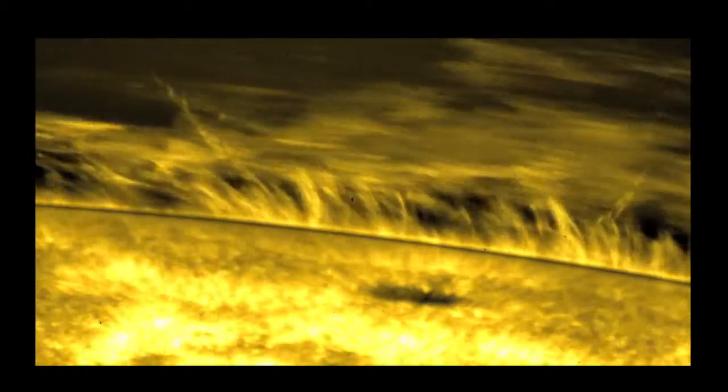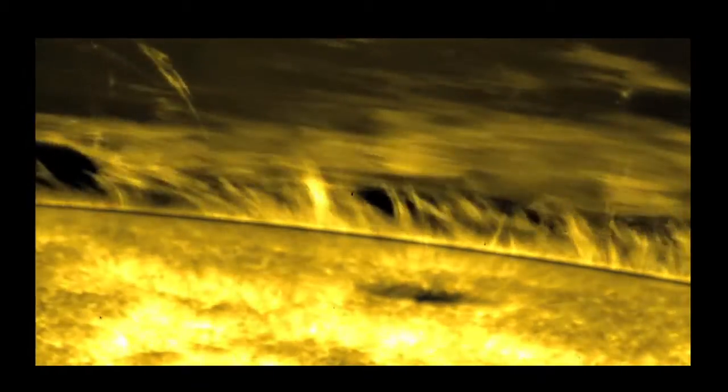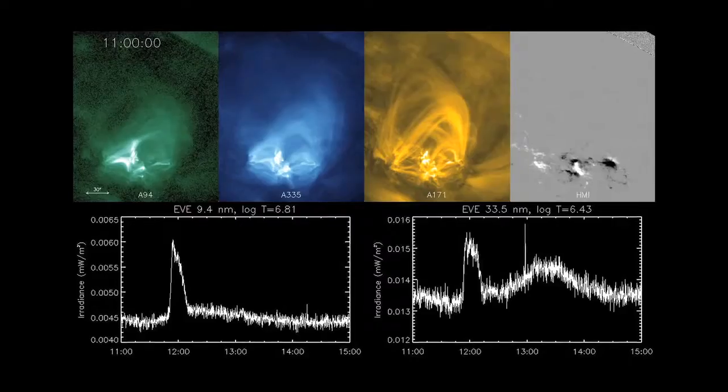It must be known that the interior rotation of the Sun is a fundamental element. That is what generates the magnetic field that creates the solar variability.